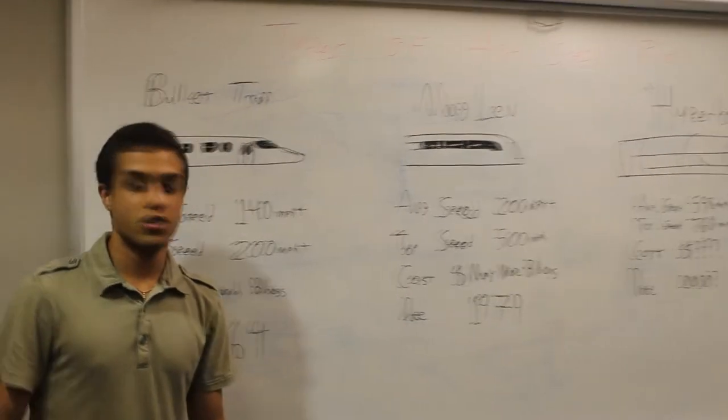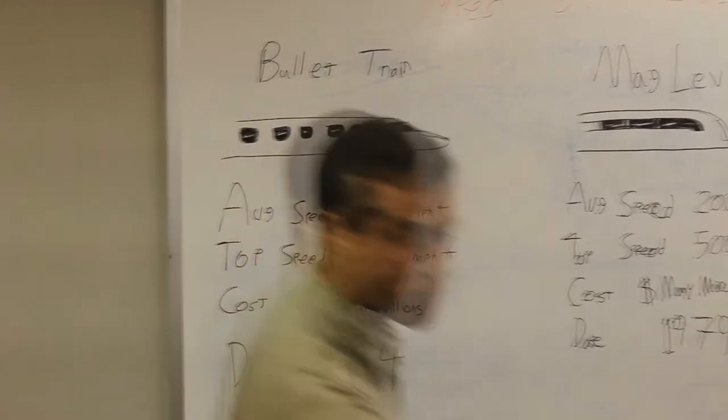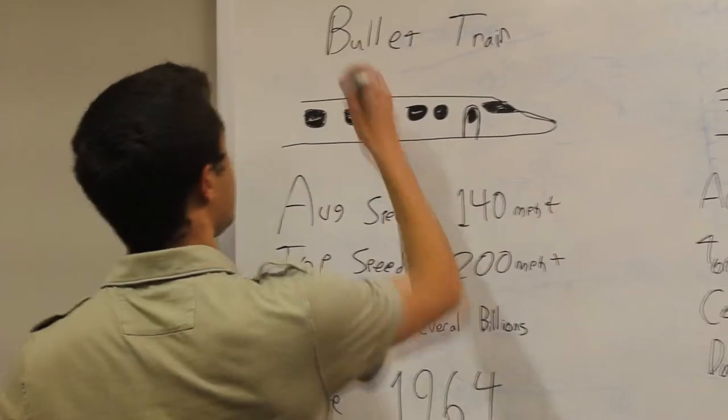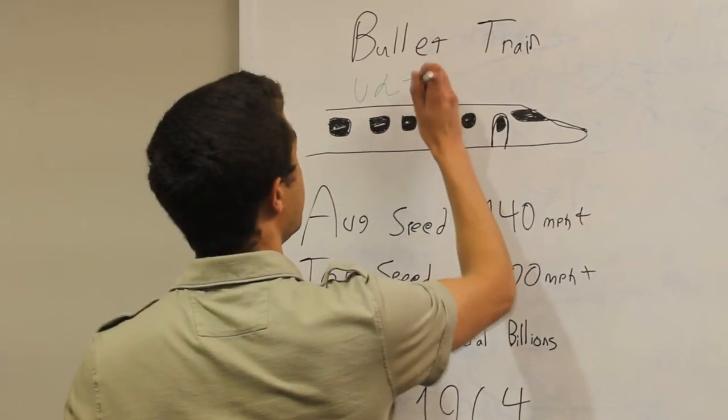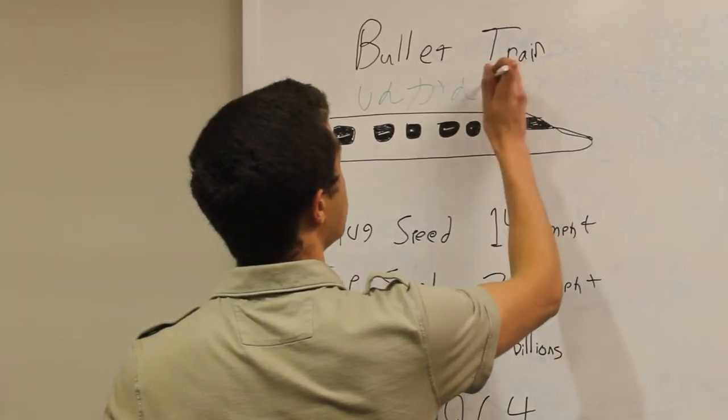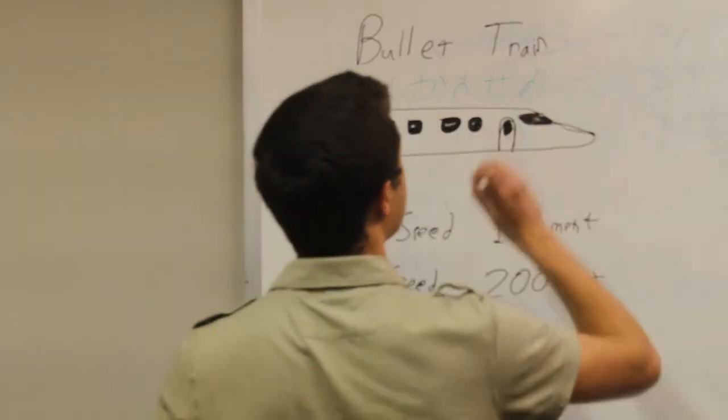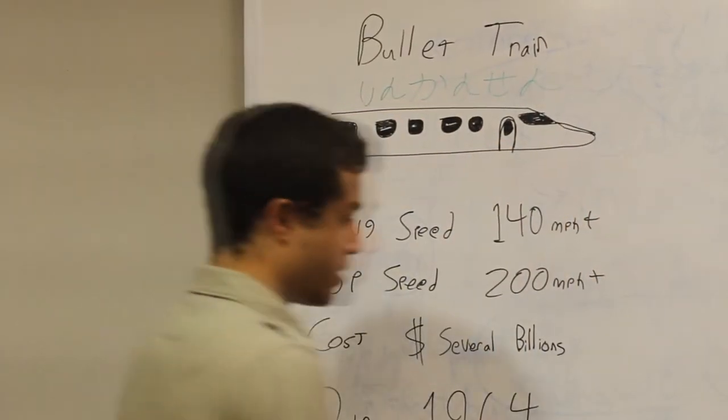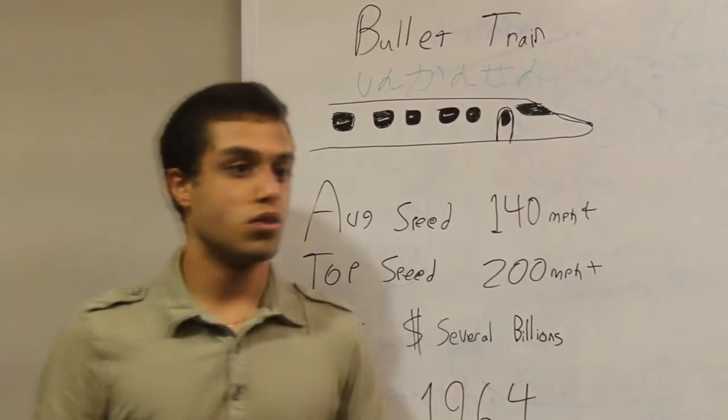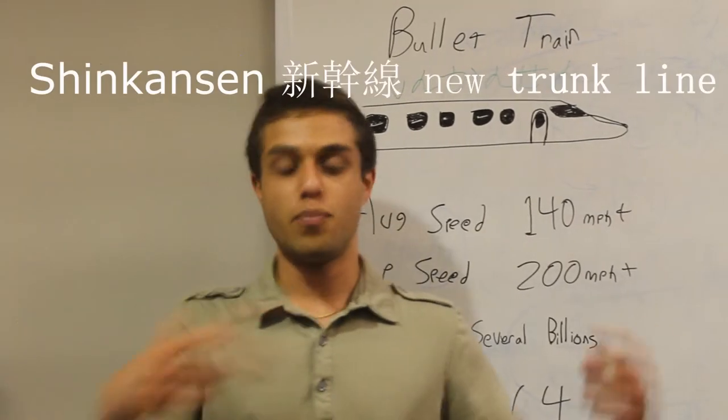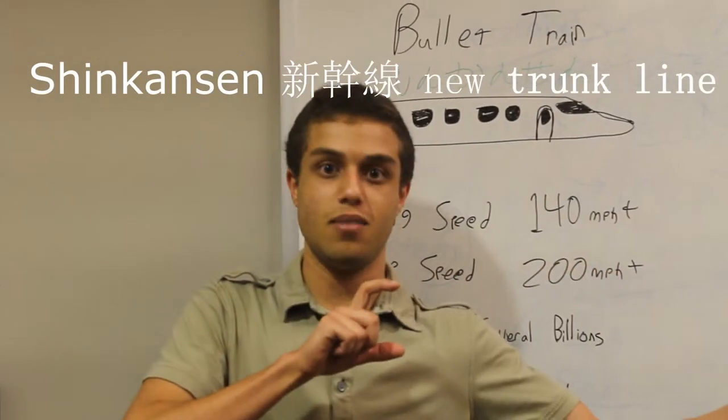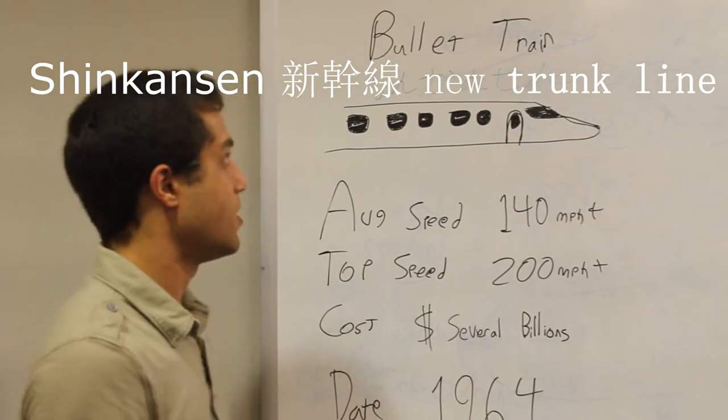Let's go to the first one, which is called the bullet train, or in Japan it will be called the Shinkansen. I think my Japanese is correct, the Shinkansen, which pretty much means New Route Trail or something. I'll probably say in the video exactly what it means in kanji or in Japanese.